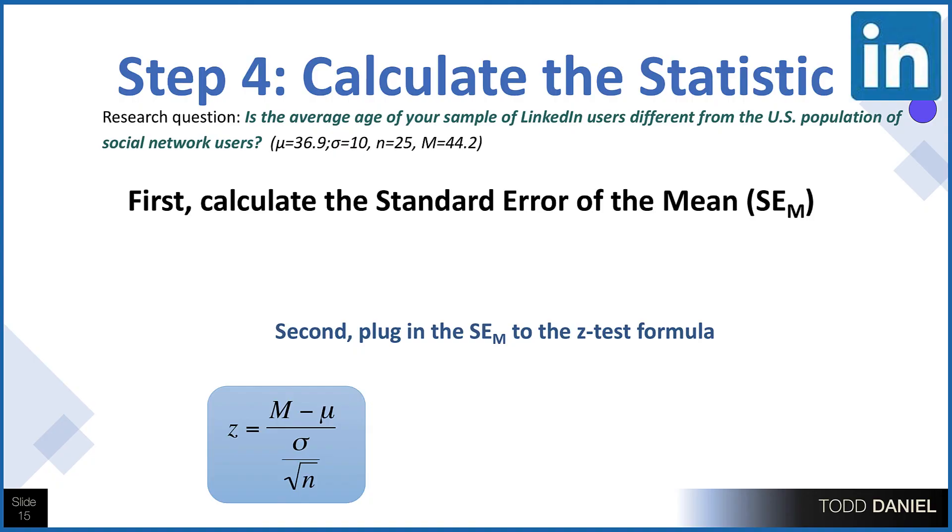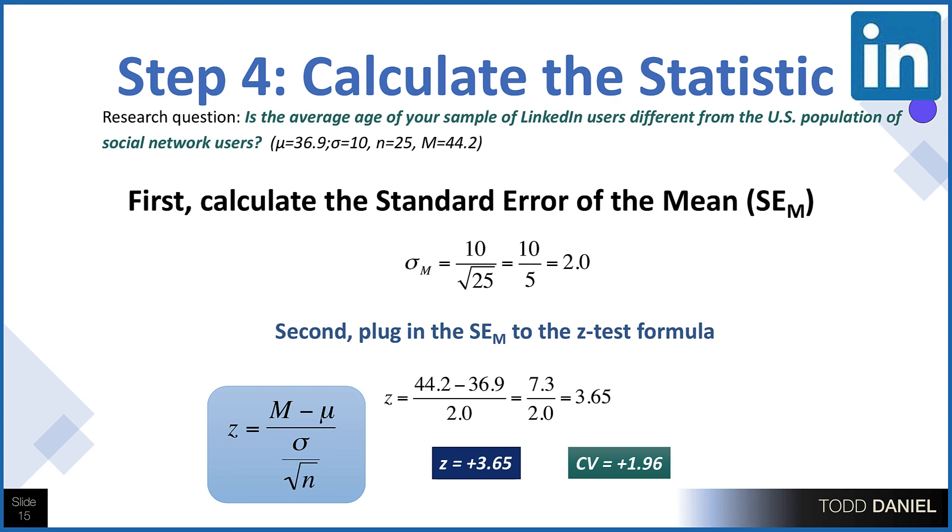Here is how we would calculate this by hand. The first thing we would do is find the standard error of the mean. So our standard deviation is 10, and our sample size is 25. We would therefore divide 10 by the square root of 25, which of course is 5, giving us a standard error of the mean of 2.0. That we will plug into the rest of our formula. The mean of the sample is 44.2. The mean of the population is 36.9. Subtract those, we get 7.3. Divide that by 2, our standard error of the mean, gives us a value of 3.65. That is our z-value for the z-test. So that is the number that we're going to compare to our critical value of 1.96. We can see already that 3.65 is larger than 1.96, so this test is statistically significant.